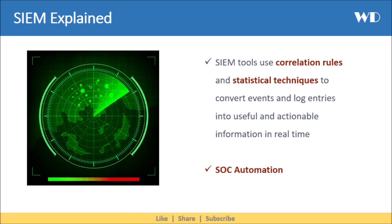The primary use of SIEM is that SIEM tools use correlation rules and statistical techniques to convert events and log entries into useful and actionable information. All this is done in real time so that organizations can act immediately. It also integrates with other security solutions using APIs, and can help you automate your SOC.